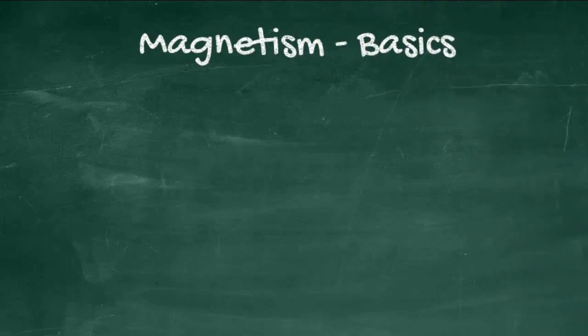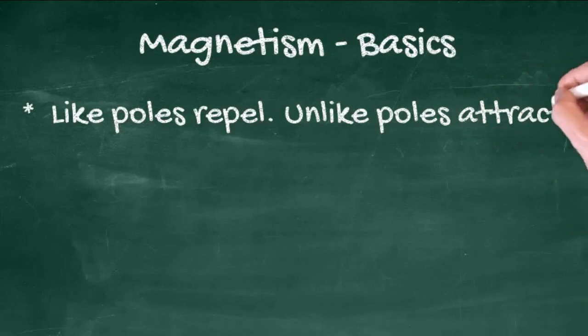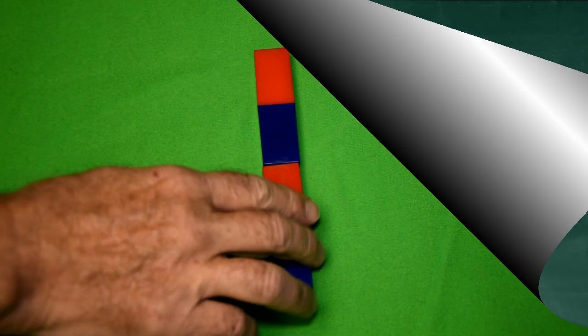Starting with the basics of magnetism: like poles repel, unlike poles attract.